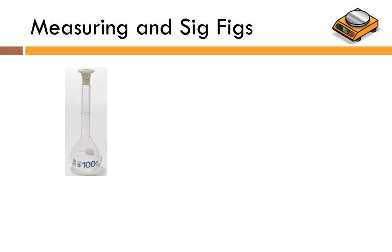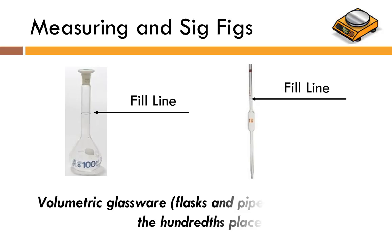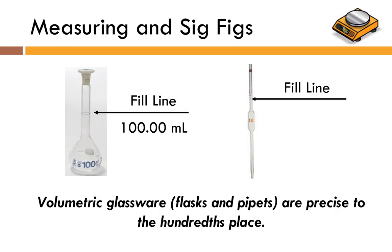In this lab we'll be using volumetric glassware, which has a fill line etched on it. All of our volumetric glassware — both flasks and pipettes — are precise to the hundredths place. So a 100 mL volumetric flask filled to the fill line has exactly 100.00 mL in it, and a 10 mL volumetric pipette filled to the line gives you 10.00 mL. Make sure the bottom of the meniscus is level with that line; if it's overfilled or underfilled you can't reliably estimate the volume, because it measures one volume very specifically.